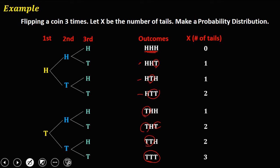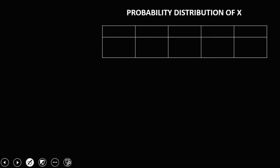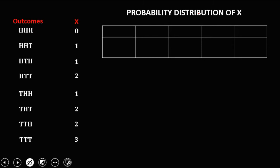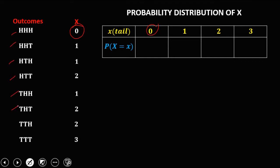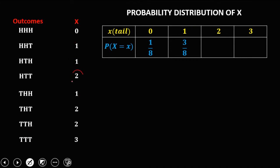Using this random variable, we can now make our probability distribution. Since X is the number of tails, the possible values are 0, 1, 2, and 3. The probability of getting no tails is 1/8; one tail is 3/8; two tails is 3/8; and three tails is 1/8. This is the probability distribution of X.